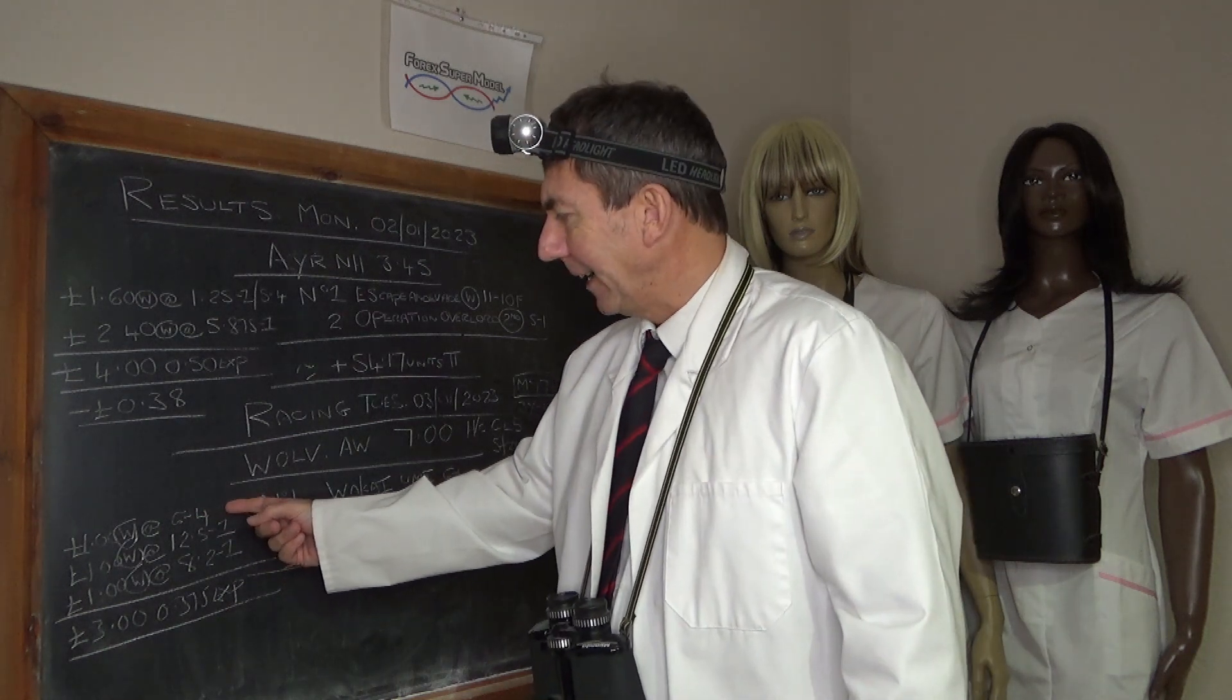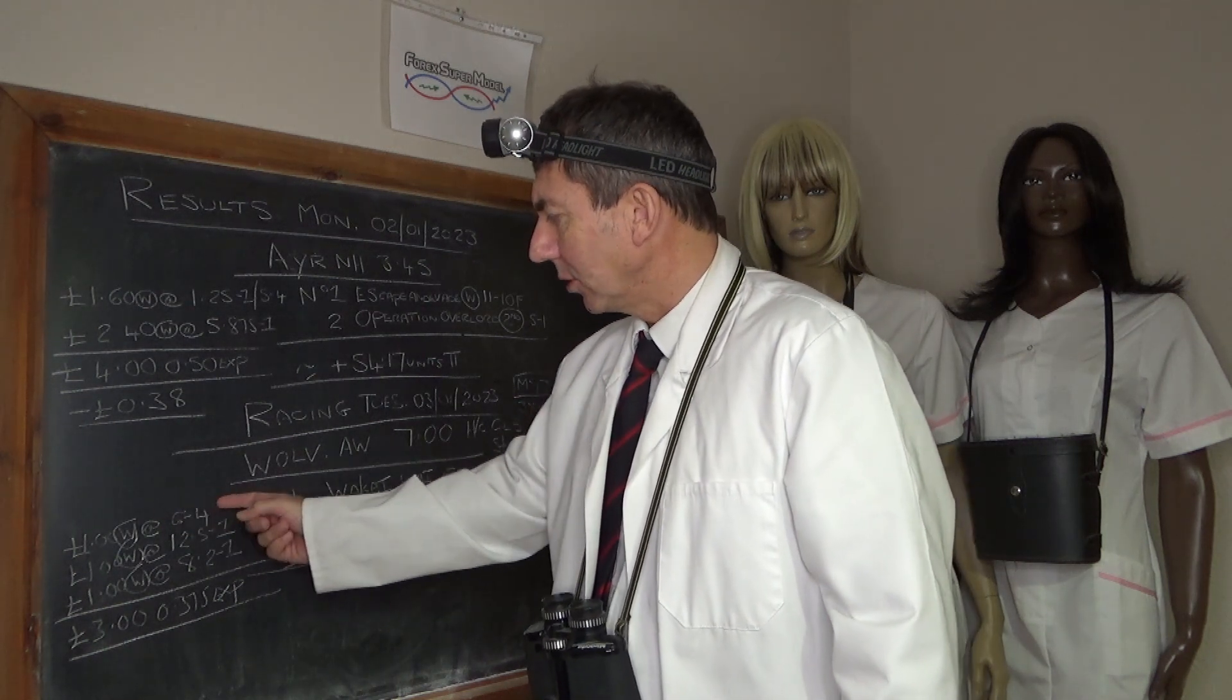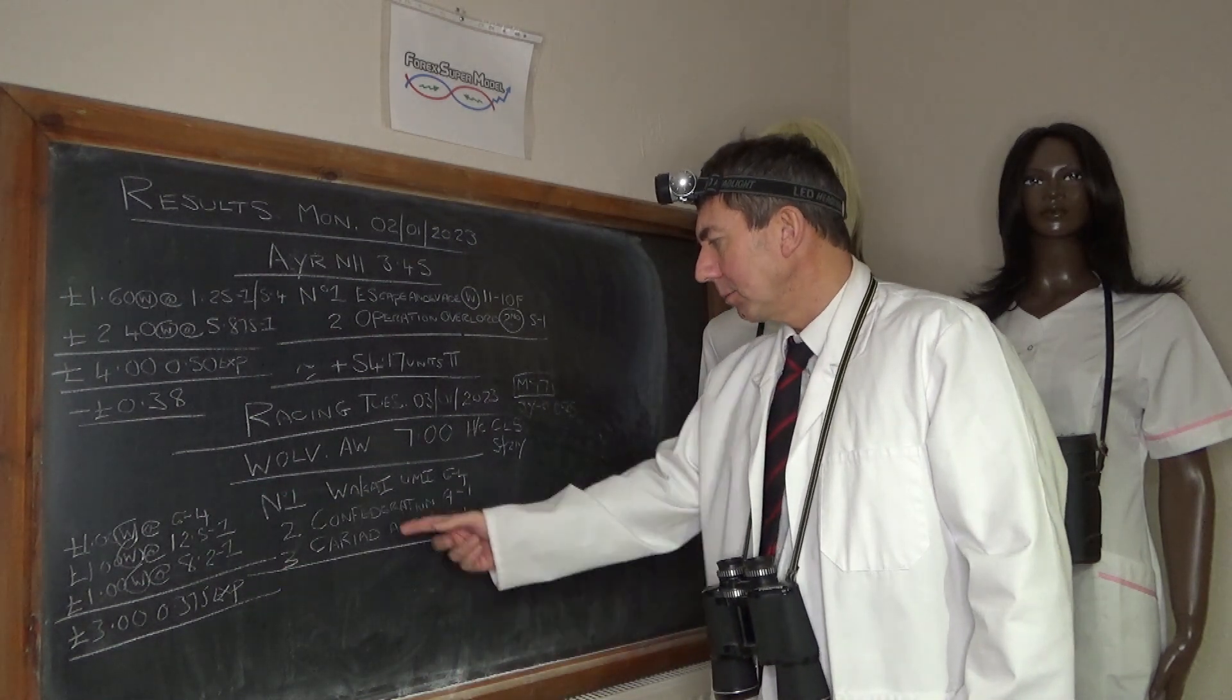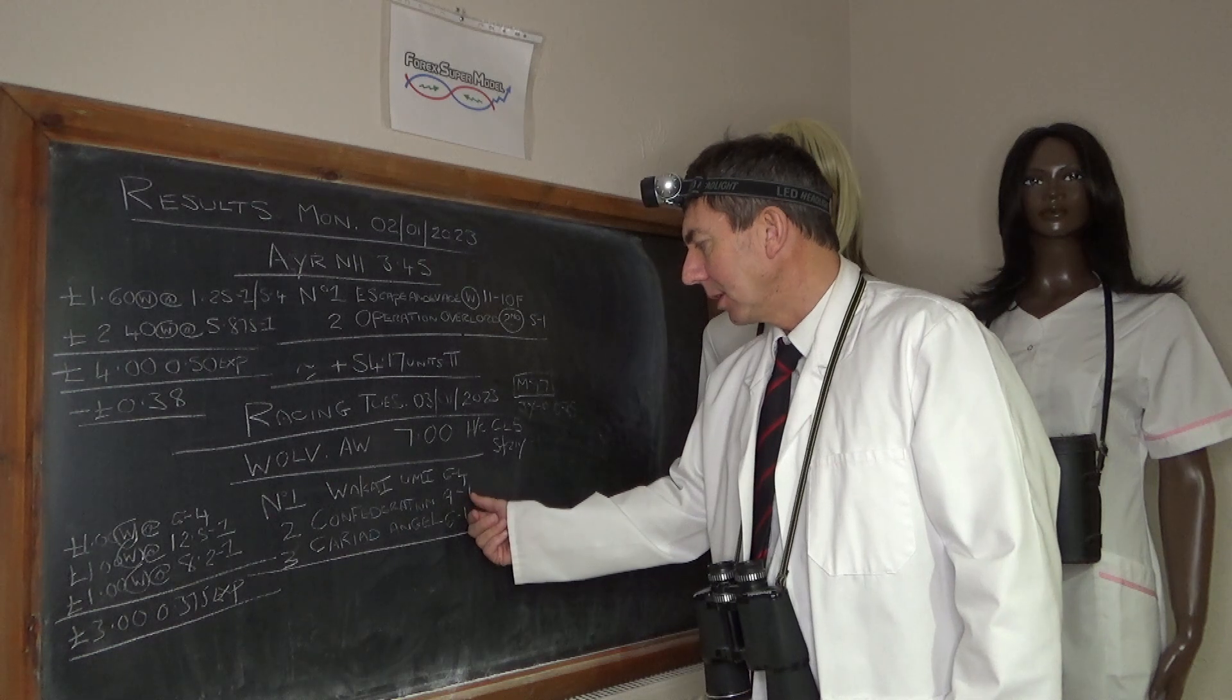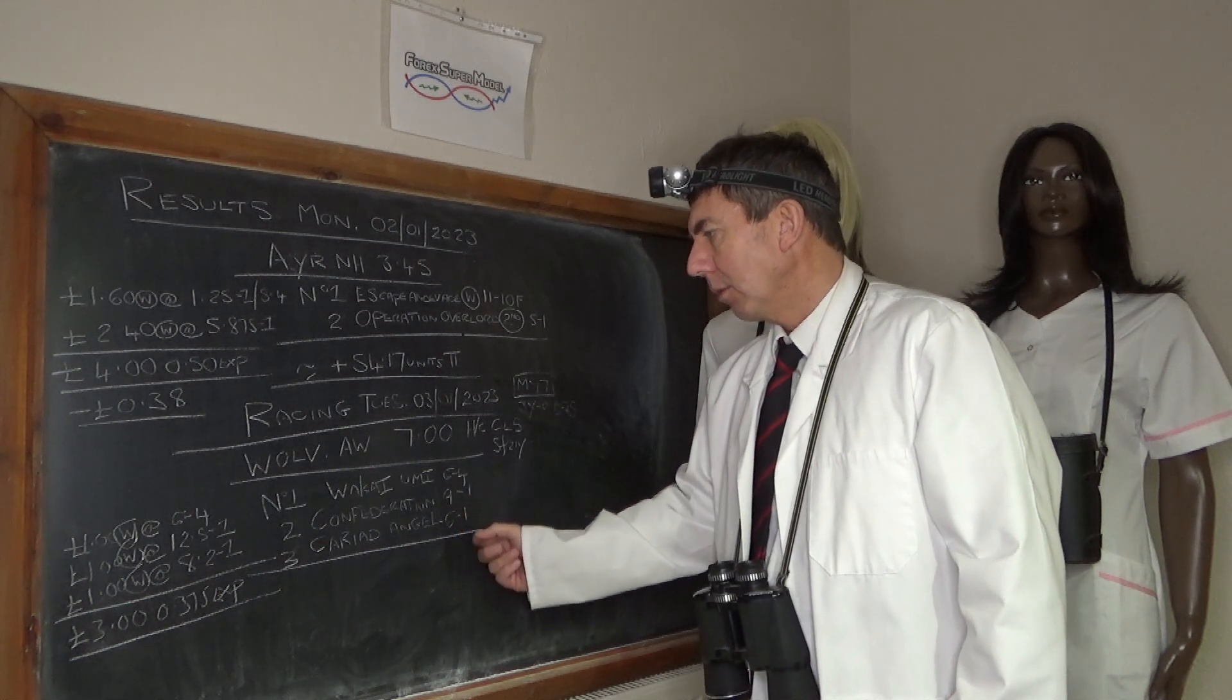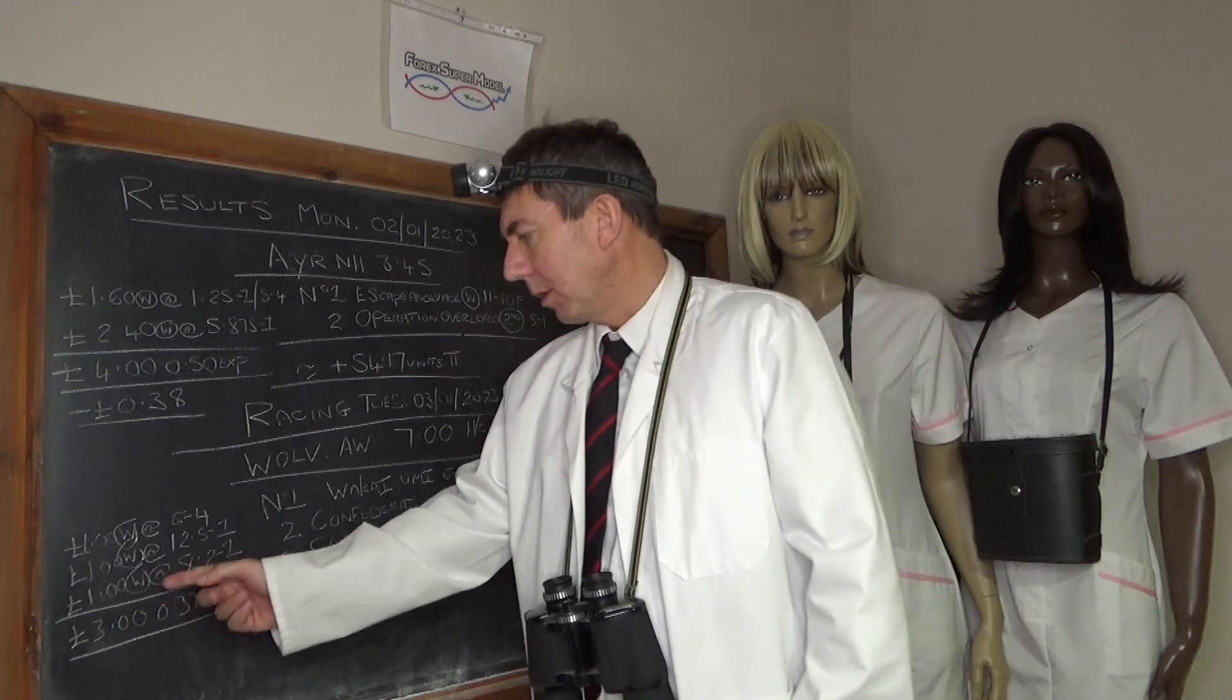So £100 on at 6 to 4 really. But the ones we really like to generate profits are number 2, Confederation, which is about 9 to 1, and Cariad Angel, which is 6 to 1, and we've got £8 per £1 unit on both of those.